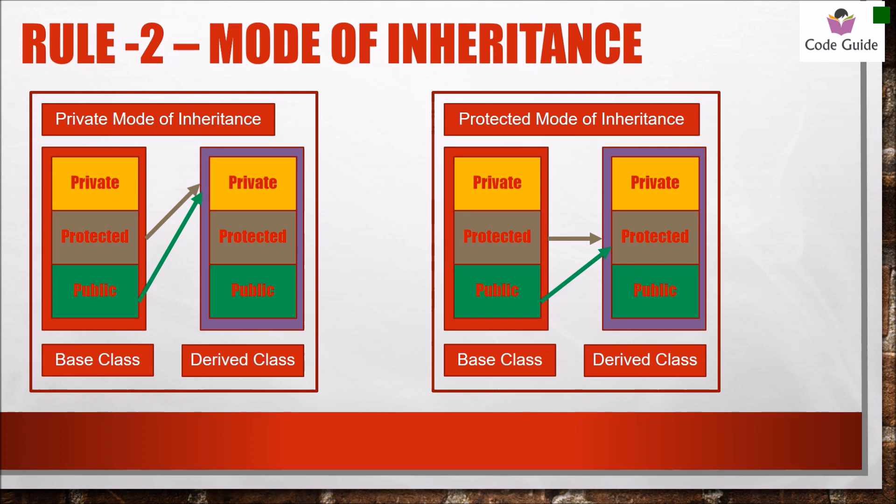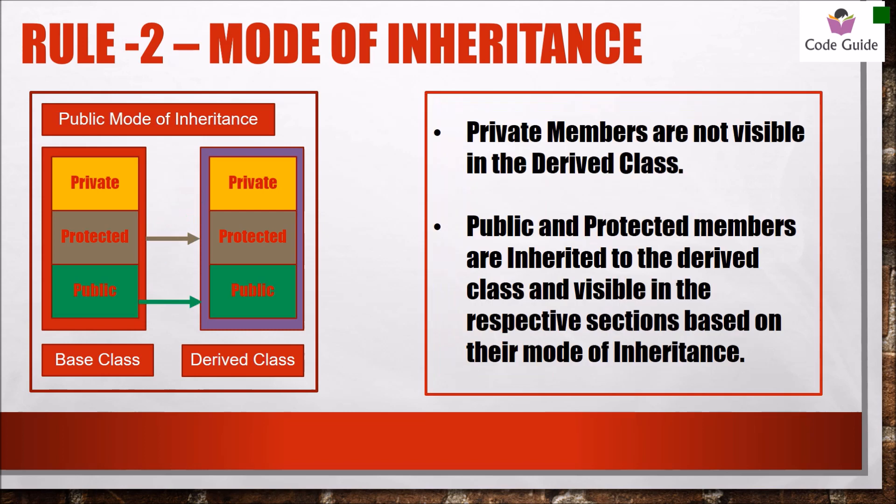So these members will not be accessible by the object, even though they were in the public section of the base class — they will not be accessible by the object of the derived class. In case of public mode of inheritance, protected members become protected members of the derived class, and public members become public members of the derived class. Their visibility modes remain the same as in the base class.